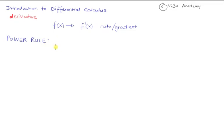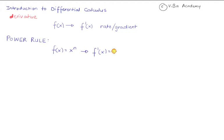The power rule says that if the original function is in the form of x raised to n, then the derivative of this function, f prime of x, is given by n times x raised to the power of n minus 1. Which means what we do is we pull down the existing power and make it a factor, and then we reduce the existing power by 1.